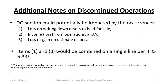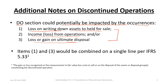To review, the DO section could potentially be impacted by the following occurrences. First, there could be a loss on writing down assets to held for sale — from cost to fair value less cost to sell. Second, there could be income or loss from operating the unit after it has been classified as discontinued. Third, there could be a gain or loss on the ultimate disposal. If items 1 and 3 — the write-down and disposal — happen in the same year, those items can be combined on a single line per IFRS 5.33. It would not be incorrect to disclose them separately, but combining makes for easier presentation.